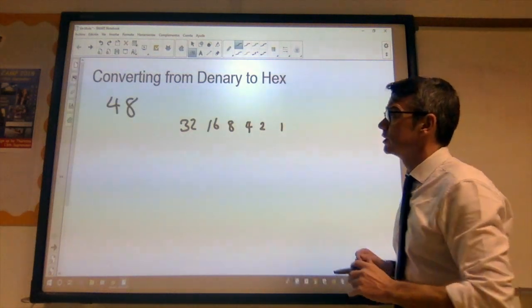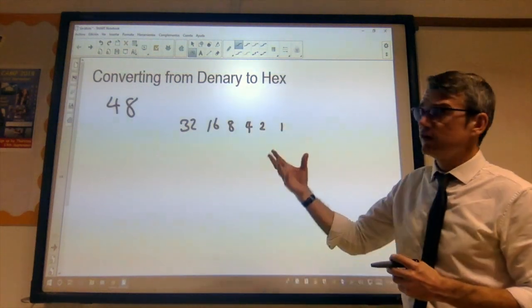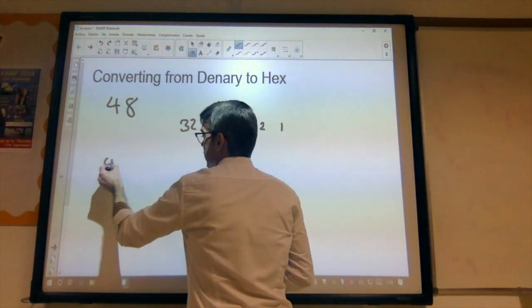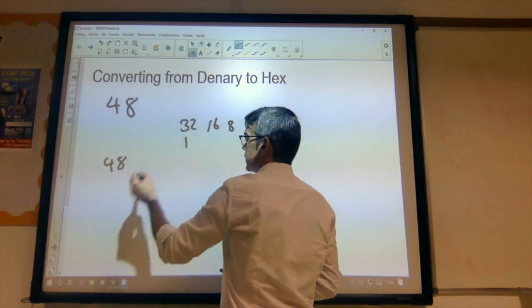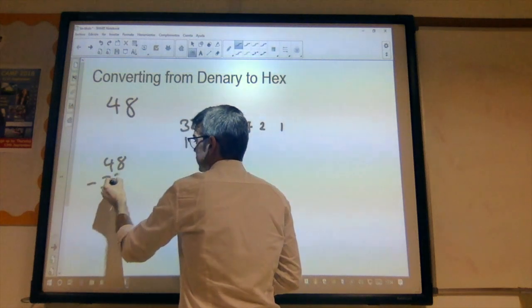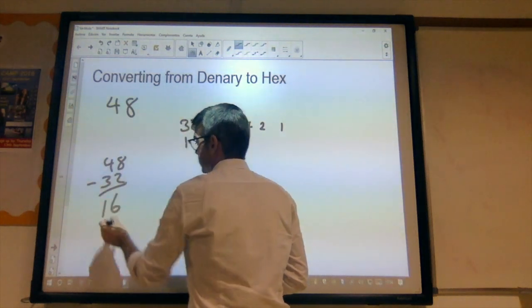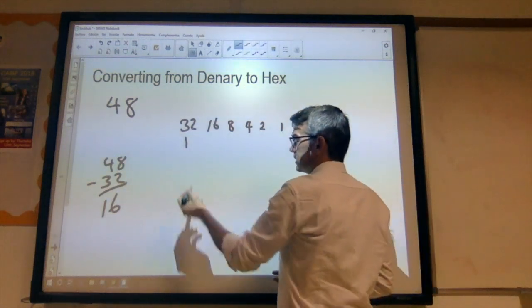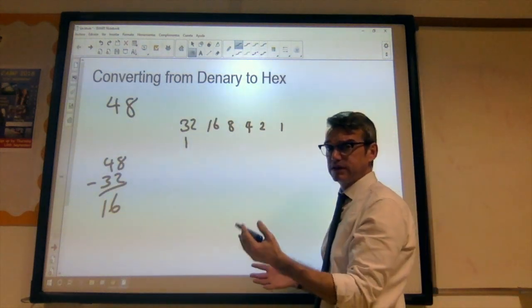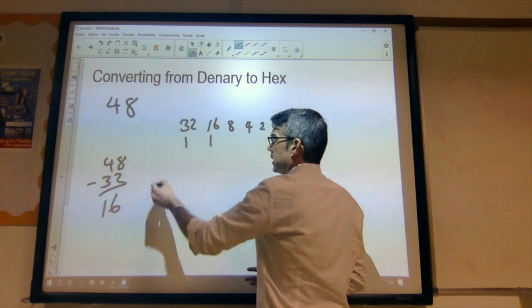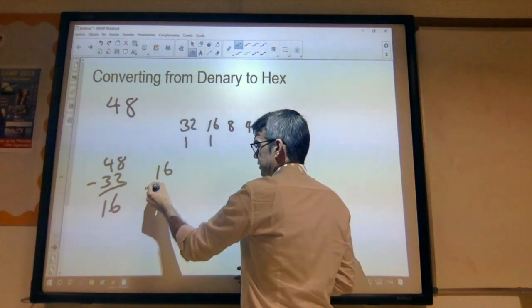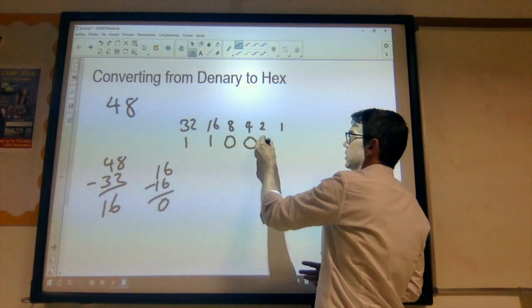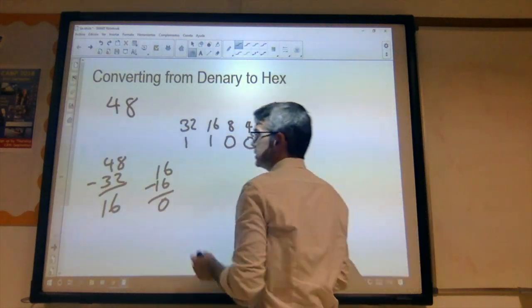So, let's first of all work out using our classic binary conversion. So, we start with the most significant bit there, and say, can 32 fit into 48? Well, yes, it can. We add a 1 under that 32, and we take 32 from 48 gives us 16. So, then we say, well, can 16 fit into, can we subtract 16 from 16? Well, yes, we can. And 16 from 16, of course, gives us 0, which tells us that the rest of our binary digits are 0.